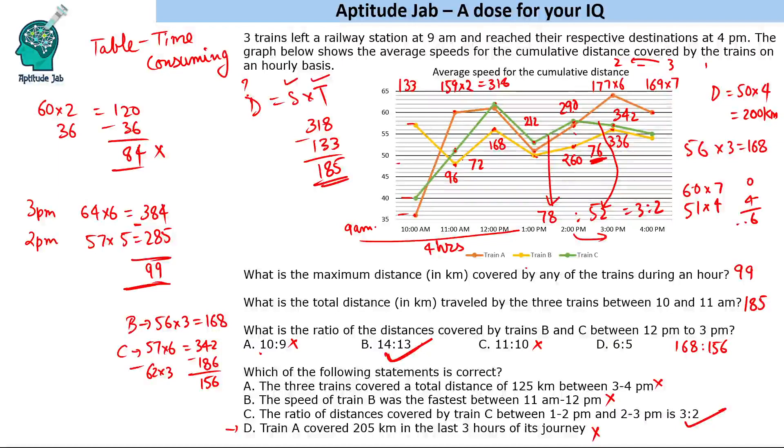This is how we can do highly calculation-intensive sets without making tables, just using some common sense and finding the relevant things. We saw that we were able to find - especially the last question was something wherein you have to check options, so that consumes time - but other questions we were able to do quite easily without even generating the table.